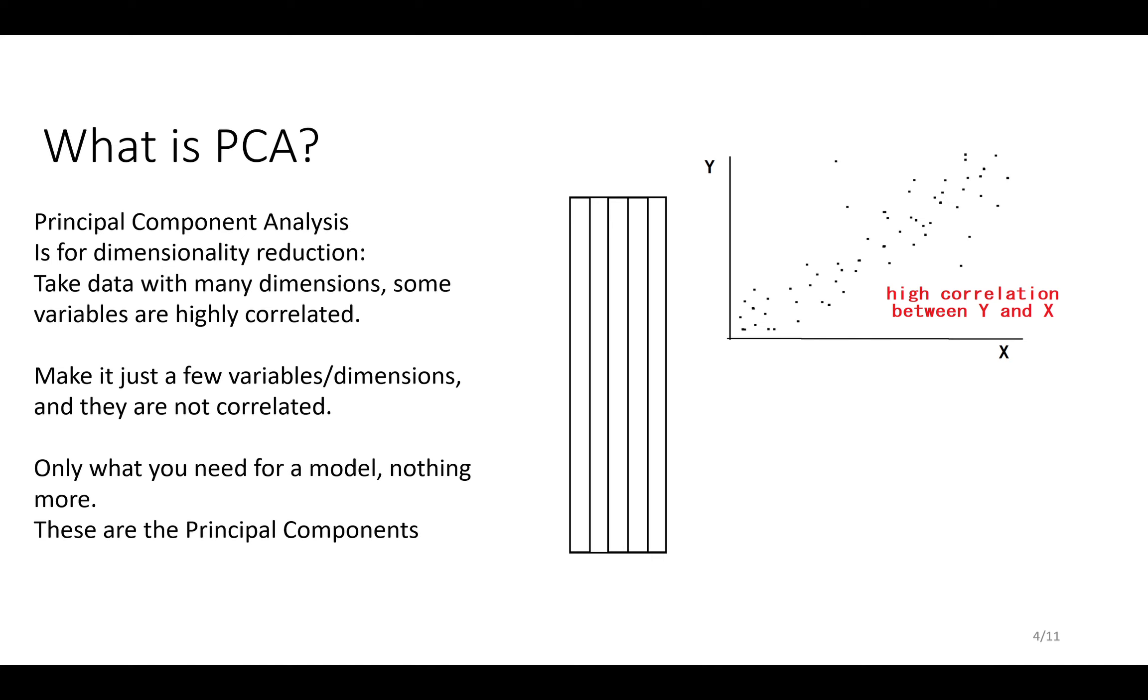You can take a dataset of maybe thousands, maybe 1,000 different variables, and you can compress it down to just five factors, for example. You can choose the number of factors that you want to keep.